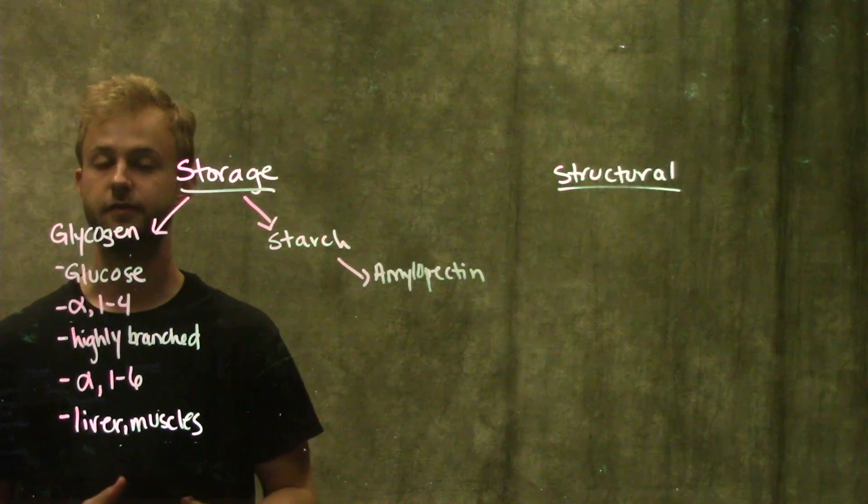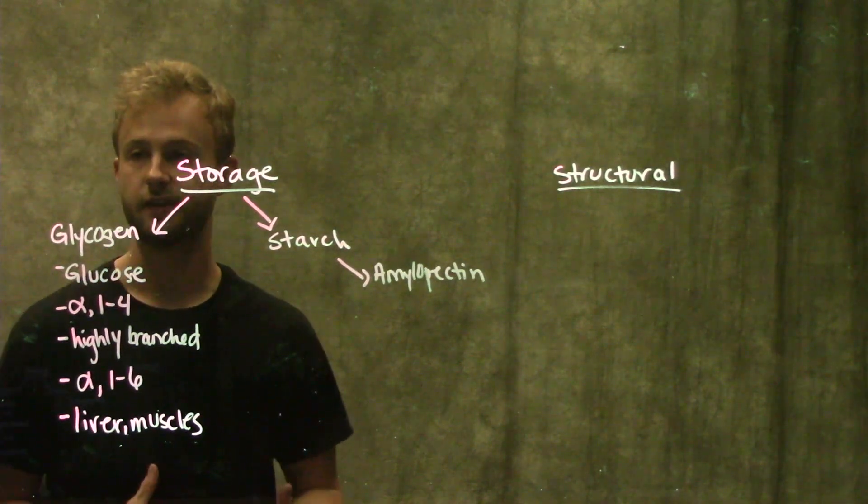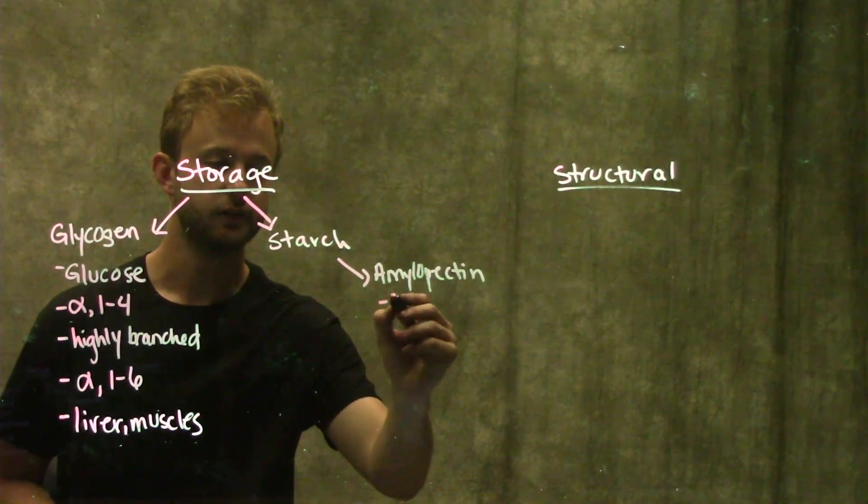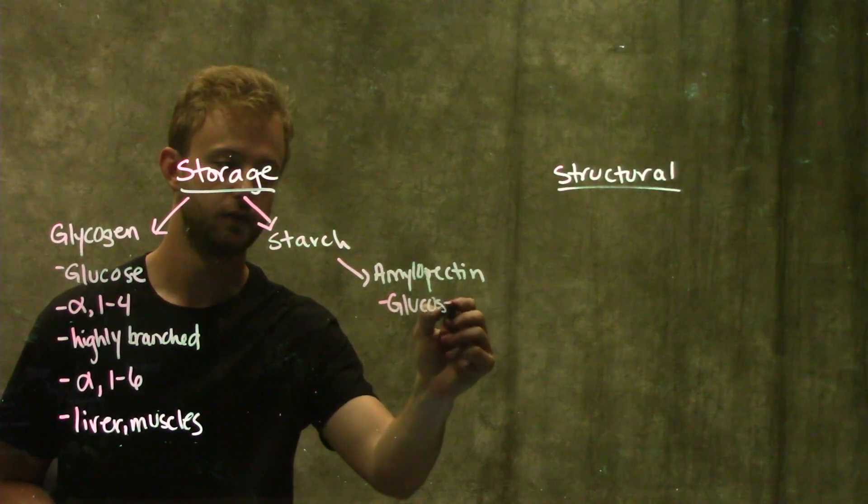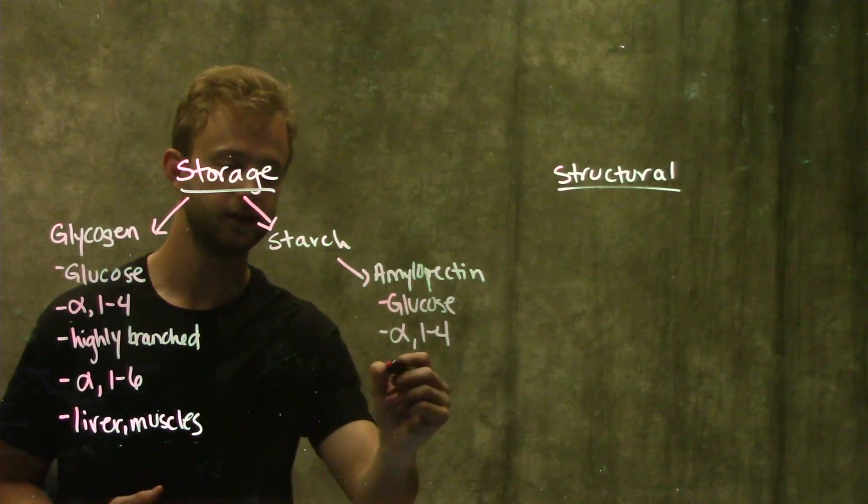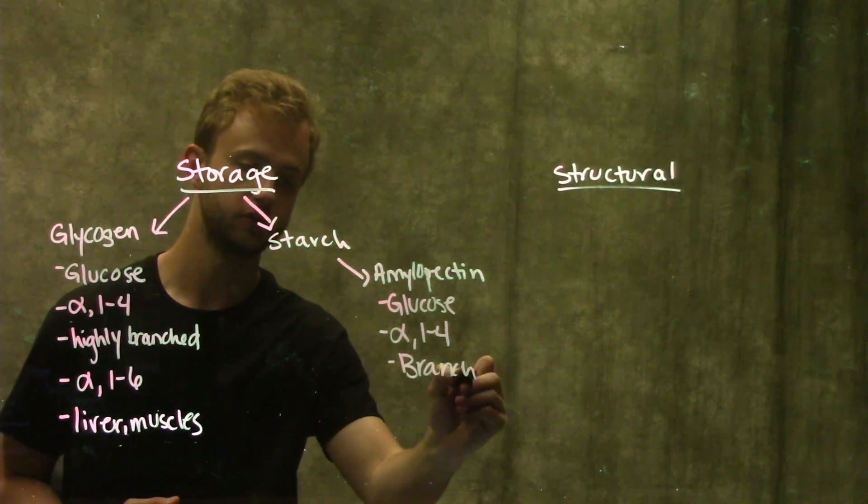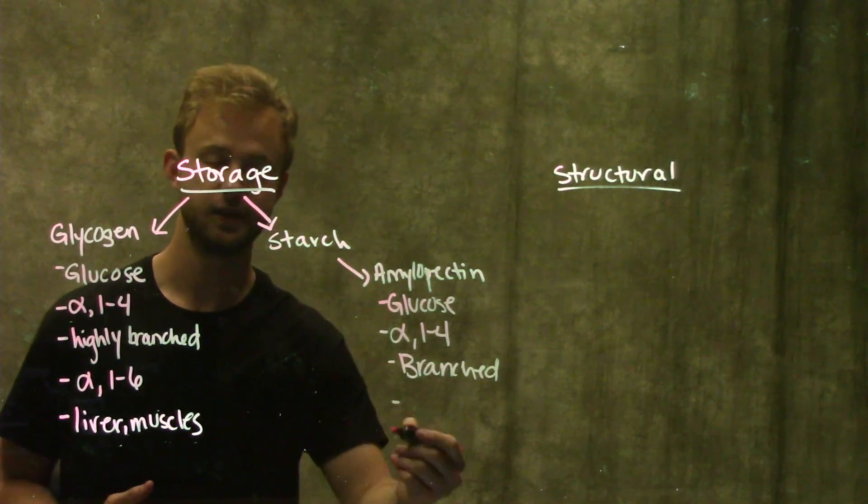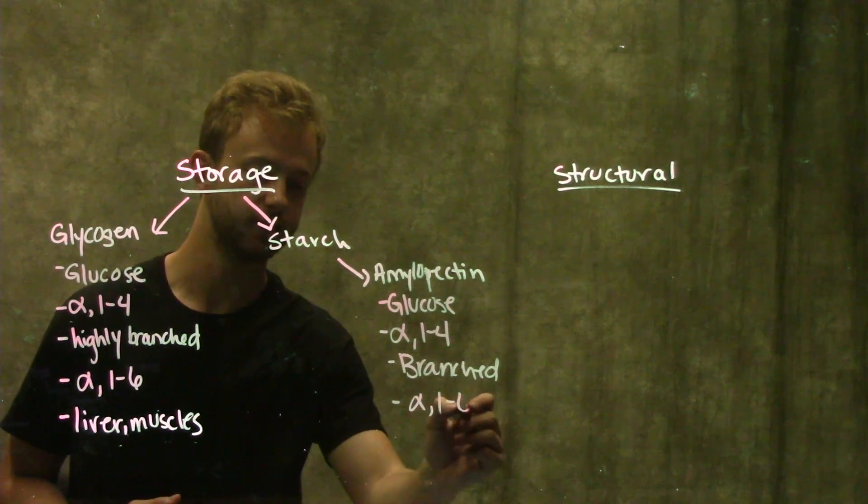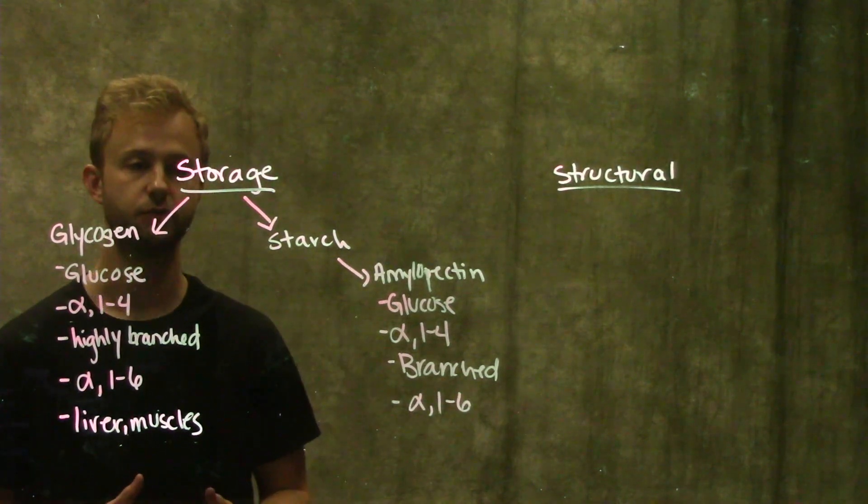Amylopectin is very similar to glycogen, just not as highly branched. It's made of glucose with mostly alpha 1,4 glycosidic linkages. It's branched, but not as branched as glycogen, and since it is branched, we have those alpha 1,6 glycosidic linkages at the branch points.